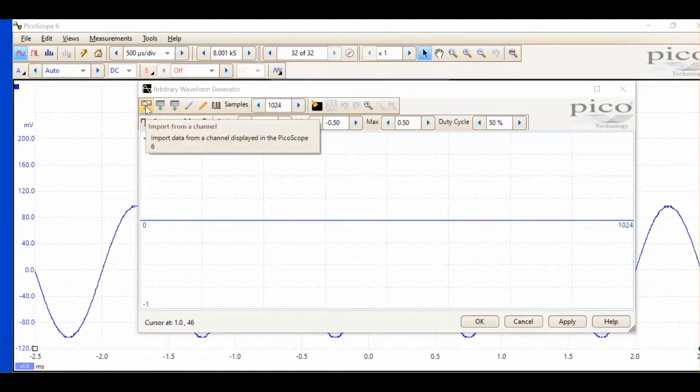we'll see the first one is import from a channel. Import data from a channel. This allows us to import a waveform from the oscilloscope into the generator. Import from the CSV. This allows us to take a saved waveform and import it back into the generator.